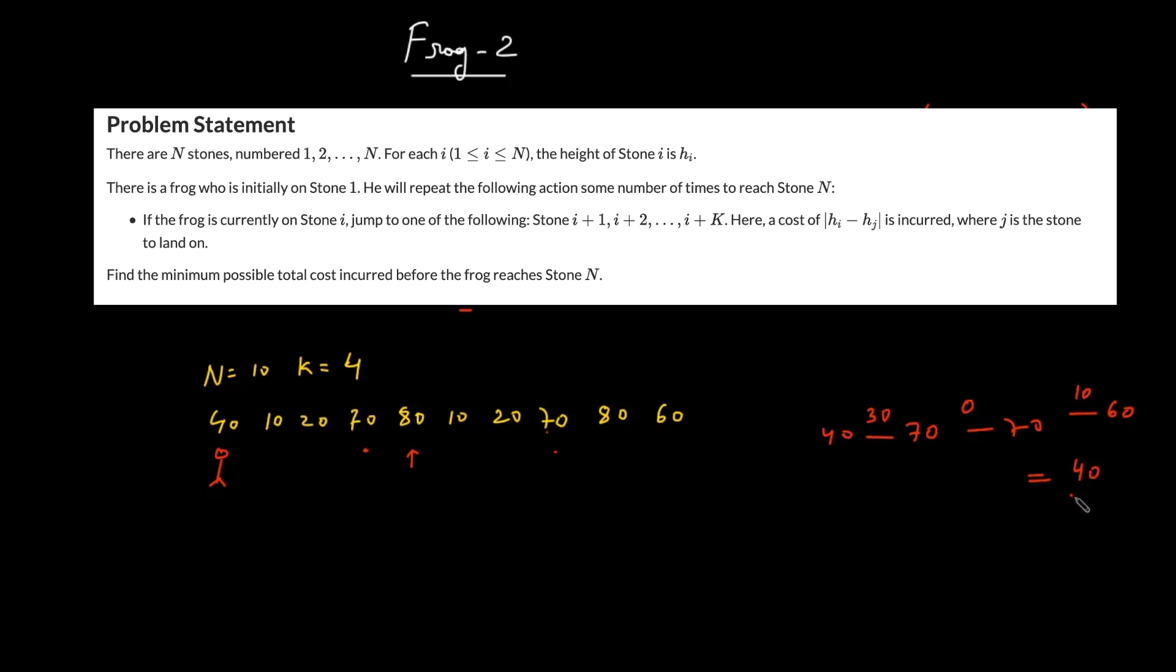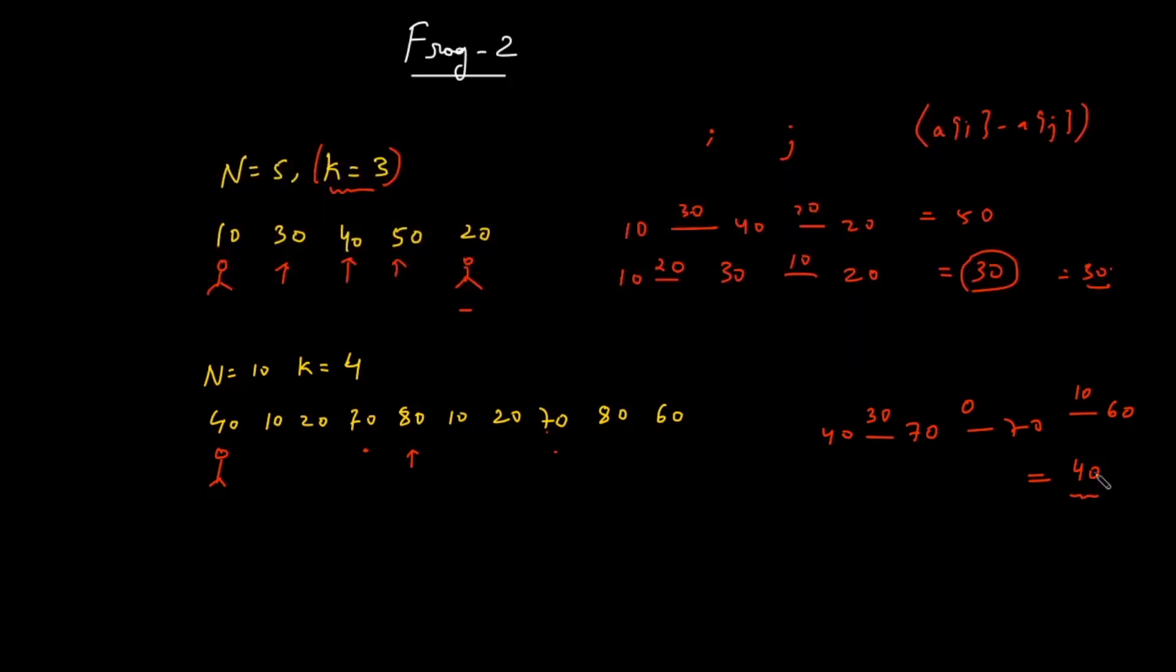If you try out all other combinations, you'll find out that 40 is the minimum cost. So 40 is our answer. The problem explicitly says that you've got to find out the minimum cost.